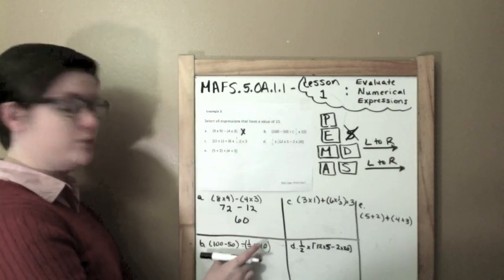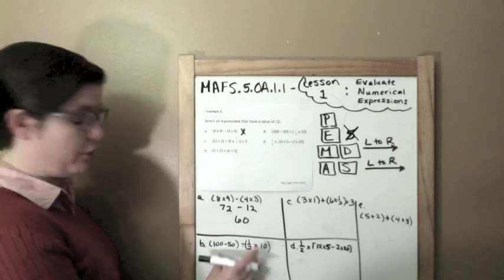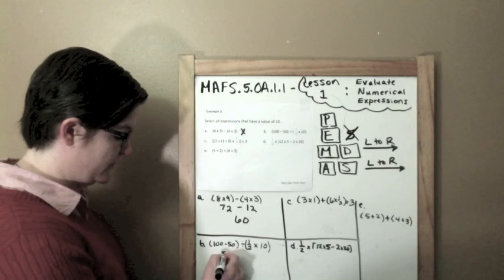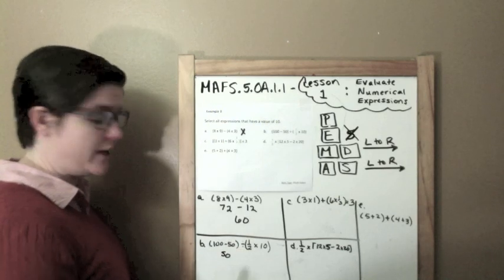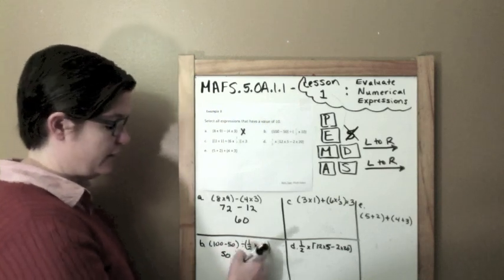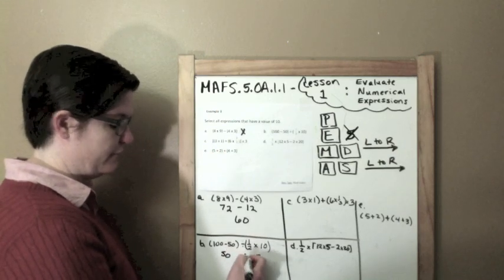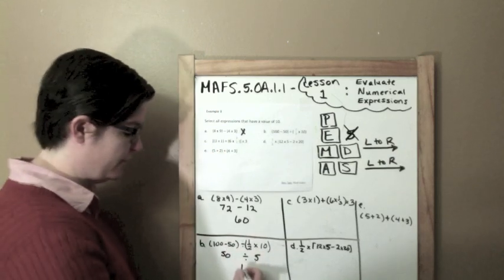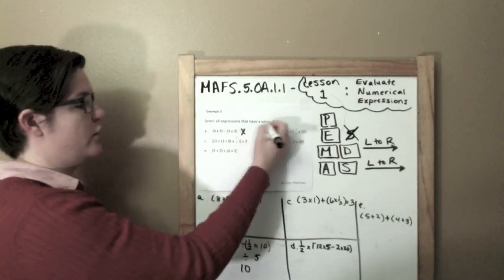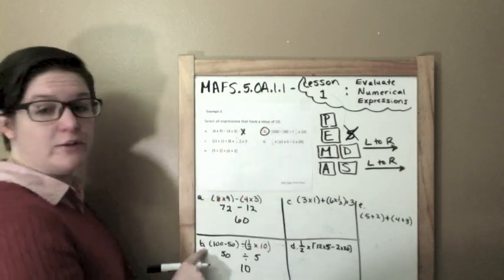B, I've got, again, two sets of parentheses. I'm just going to solve them both out. 100 minus 50 is 50. 1 half times 10 will be 10 divided by 2, which is 5. And 50 divided by 5 will give me a value of 10. So B is one of our answers.